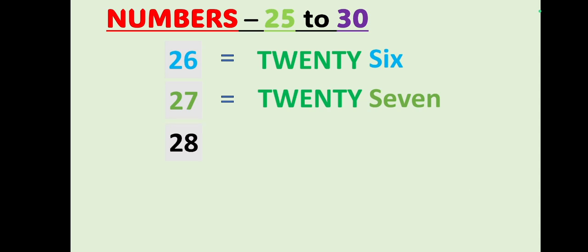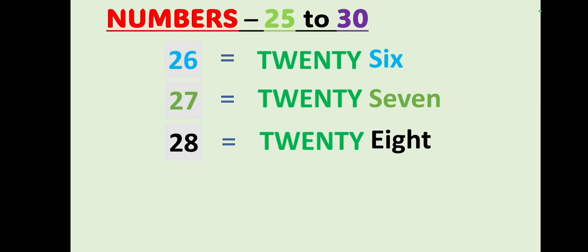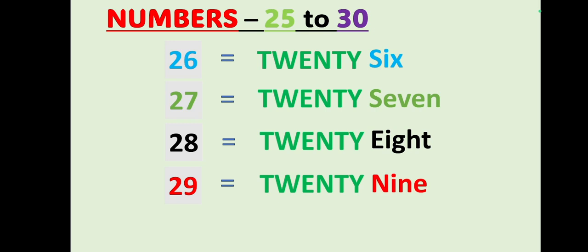Number 28: T W E N T Y, 20, E I G H T, 8 — 28. Number 29: T W E N T Y, 20, N I N E, 9 — 29. Number 30: T H I R T Y — 30. Okay students, let's move on to the next number section.